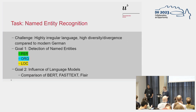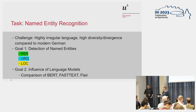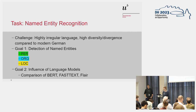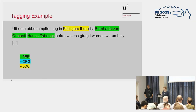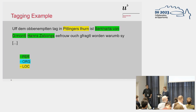So we start with named entity recognition. The challenge was, as I said, the language is highly irregular with high diversity and divergence compared to modern German. The goal was detecting names and identities like persons, organizations, and locations. The second goal was to check the influence that language models have; we did compare BERT, FastText, and Flair. And here is a tagging example — Ismail is going to tell us how this actually works. We have here a location tag and two person tags.